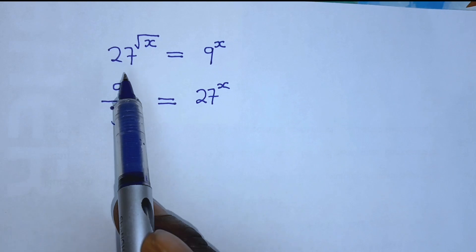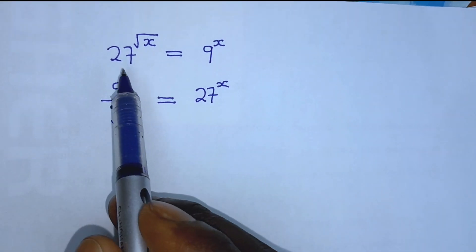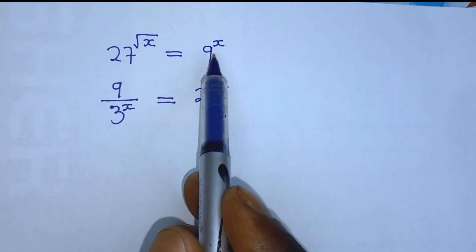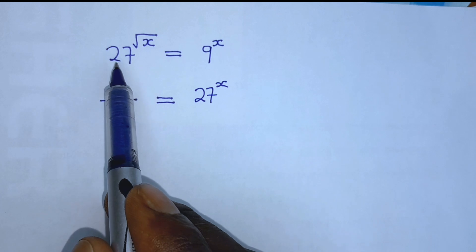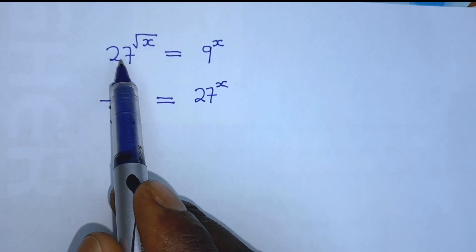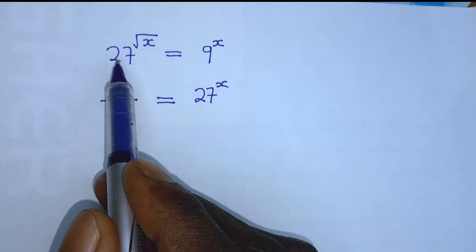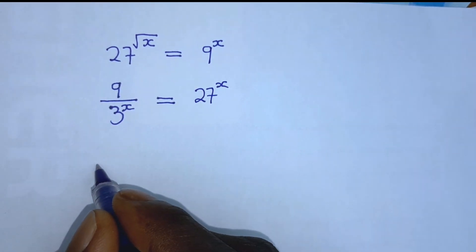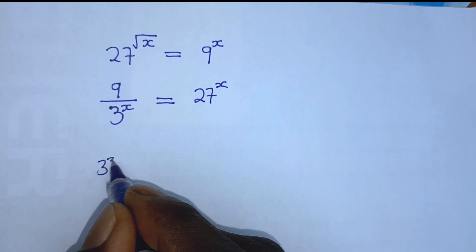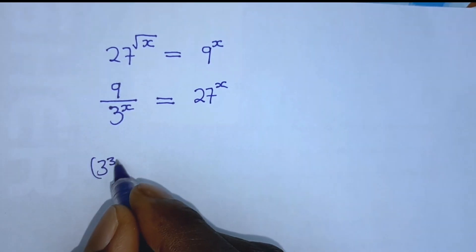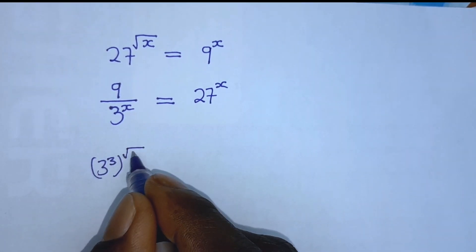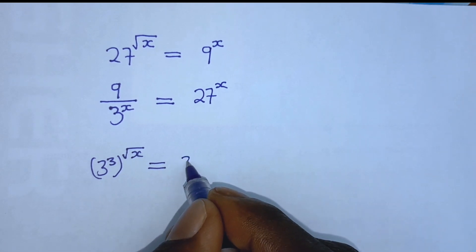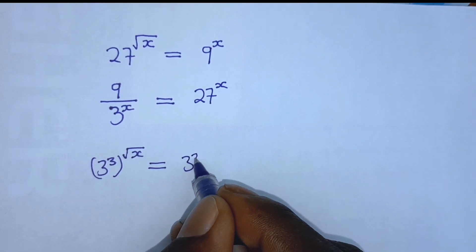The first equation is 27 to the power of root x, which is equal to 9 to the power of x. The first step here is to write 27 as an index — therefore we have 3 to the power of 3 for our square root of x, which is equal to 3 to the power of 2 for our x.